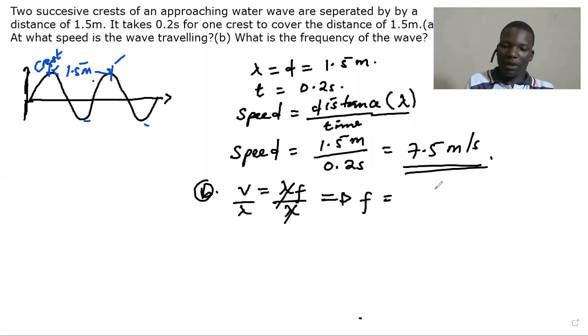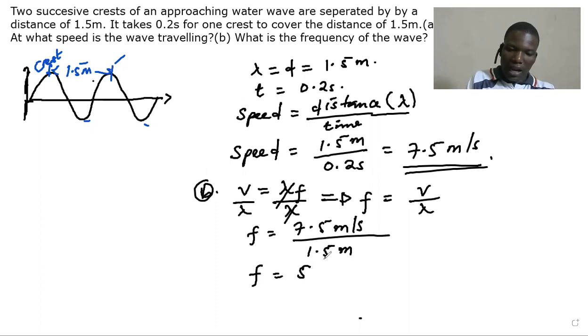And we're going to have frequency being equal to speed being divided by wavelength. So the frequency is going to be the speed we just calculated, which is 7.5 meters per second, divided by the wavelength, which is 1.5 meters. So if we punch that on the calculator we are going to get frequency 5 per second.